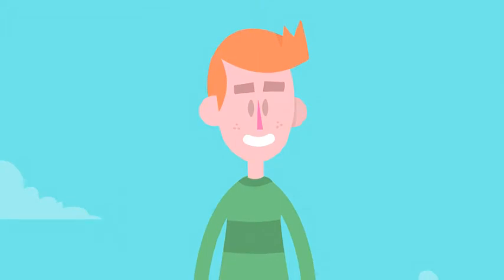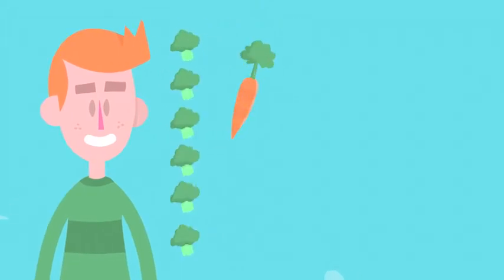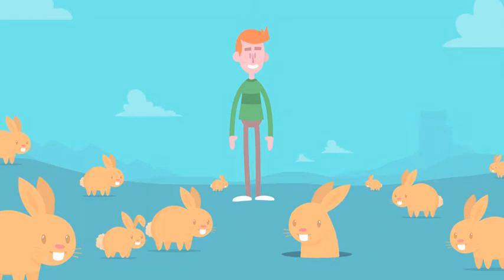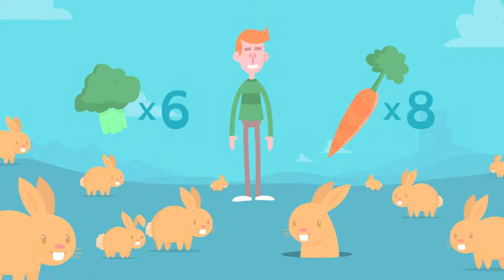Meet Carl. He has six pieces of broccoli, eight carrots, and a whole lot of rabbits. He wants to feed each rabbit an equal amount of each vegetable. What's the maximum number of rabbits he can feed?